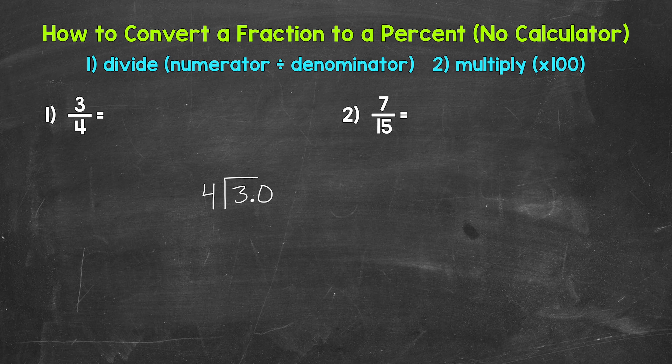Now remember, zeros to the right of a decimal or decimal digits do not change the value of a number, so we're able to do this. Now let's take the decimal and bring it straight up into where the quotient — the answer — will be. Now we can go through our division steps. I'm going to extend this division bar here.